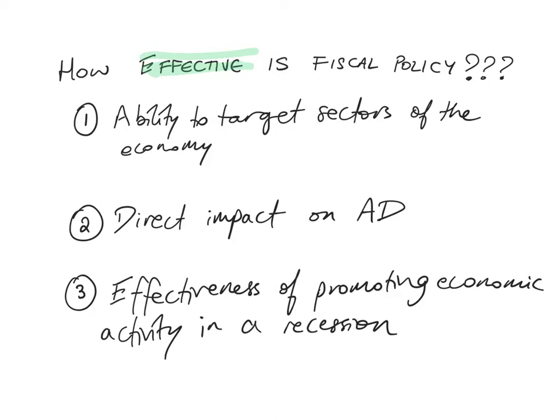One strength of fiscal policy is its ability to target sectors of the economy. The government can target its spending as well as its tax increases or tax cuts on specific sectors, whether it's education, healthcare, or maybe sectors that are polluting too much — the government can increase the tax rate on them. So there is this ability to target specific sectors.